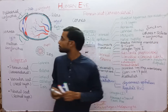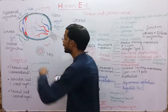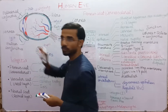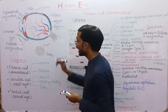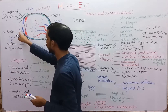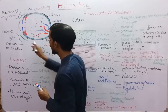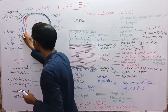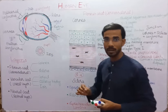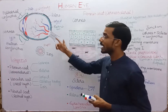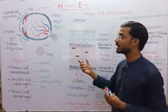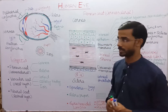Here in the diagram you can see the cornea at the front of the eye, the sclera at the back, and the conjunctiva. The point where the cornea, sclera, and conjunctiva meet is called the corneal limbus.